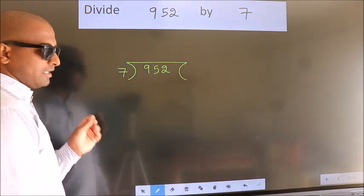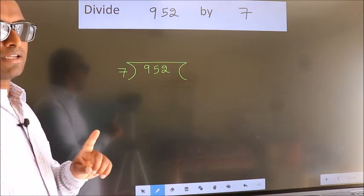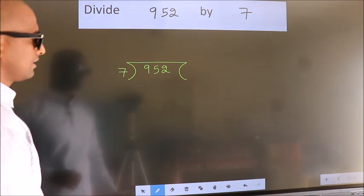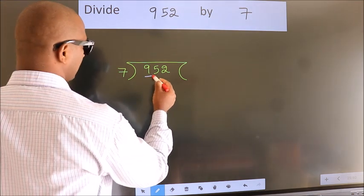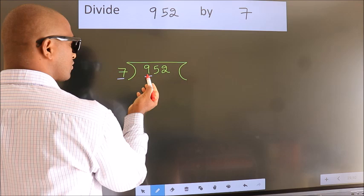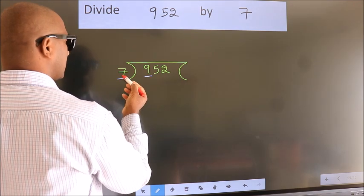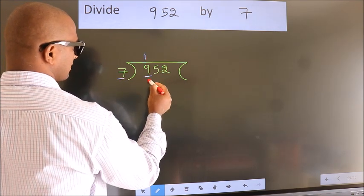This is your step 1. Next. Here we have 9, here 7. A number close to 9 in 7 table is 7 times 1 is 7.